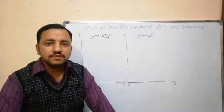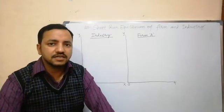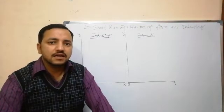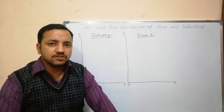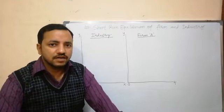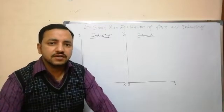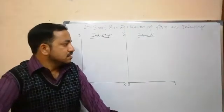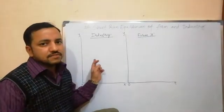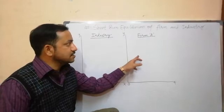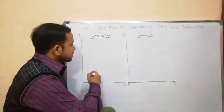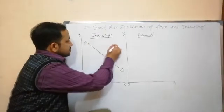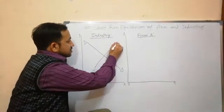We will describe these situations using diagrams. We assume there are three firms — Firm A, Firm B, and Firm C — in the market, representing three situations: super normal profit, normal profit, and loss. The first diagram denotes the industry, and the second diagram denotes Firm A.